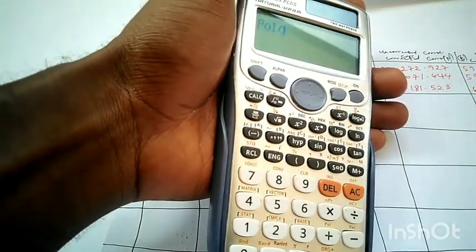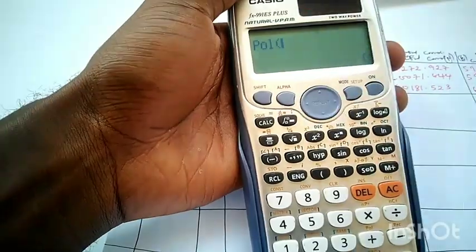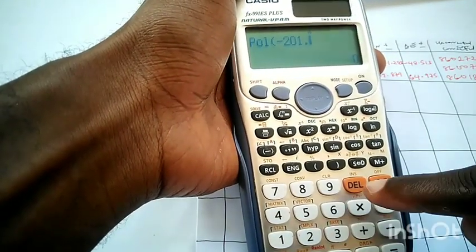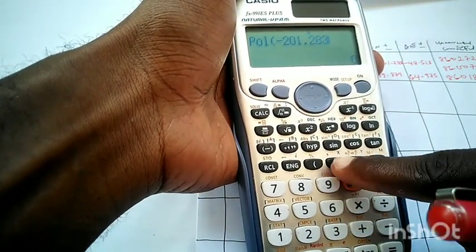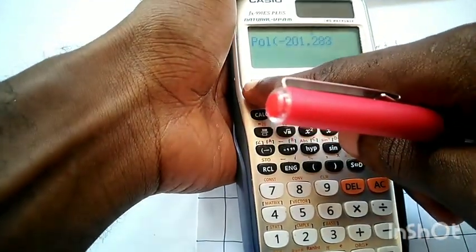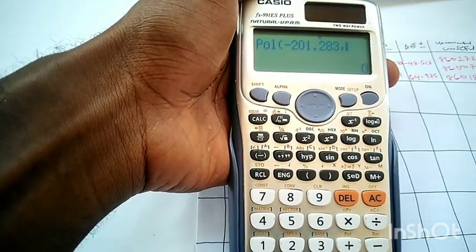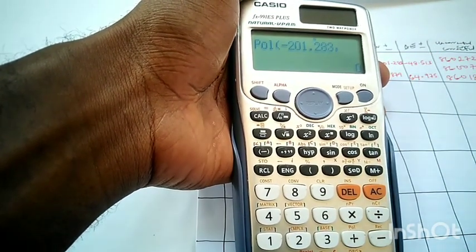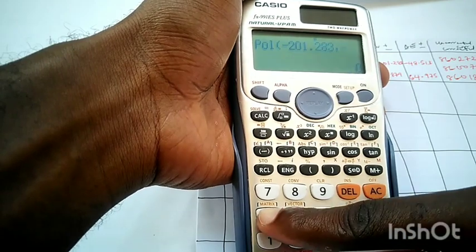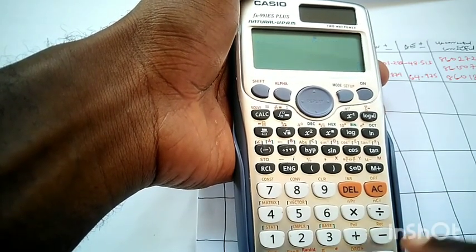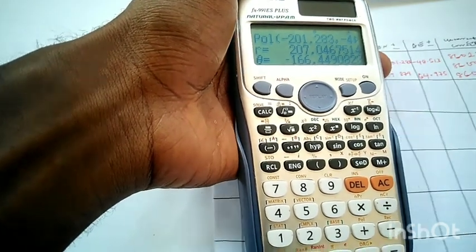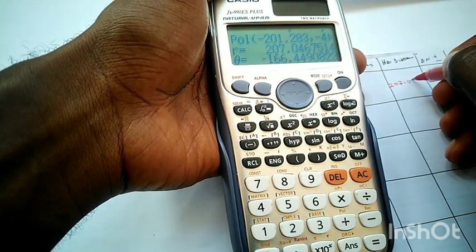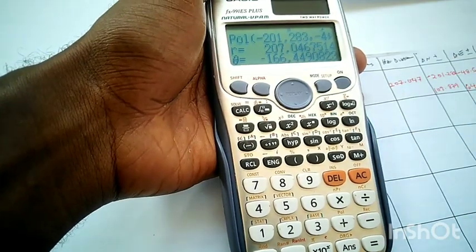We have our calculator. The pole function is there. For this line, our delta northing is minus 201.283. We need the comma, so we press shift close bracket. The comma comes out. And we write the easting partial coordinate which is minus 48.513. So the distance between the two points is 207.047 to three decimal places.